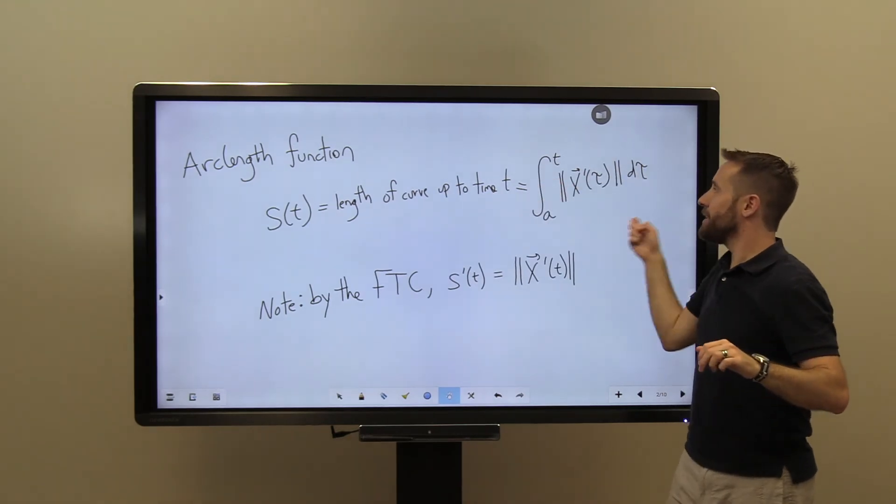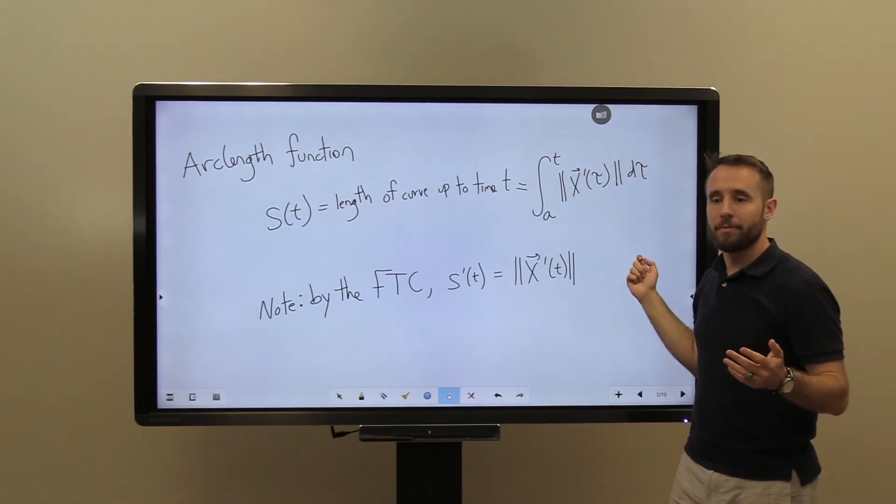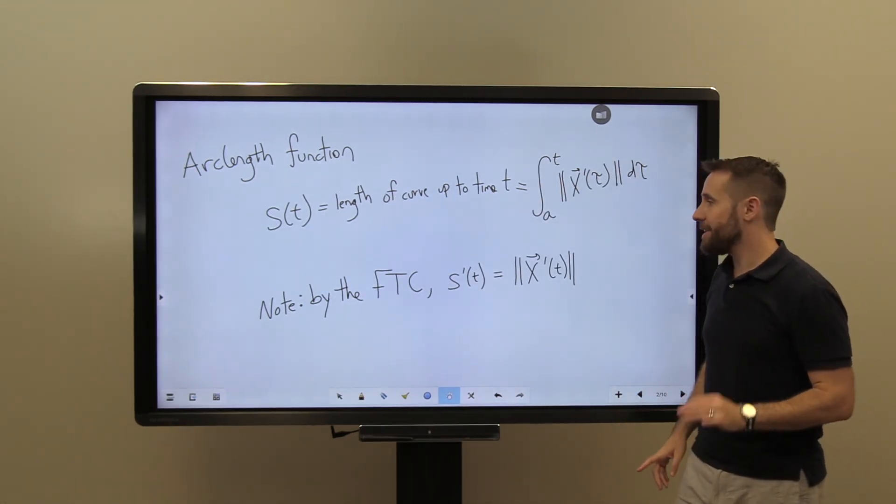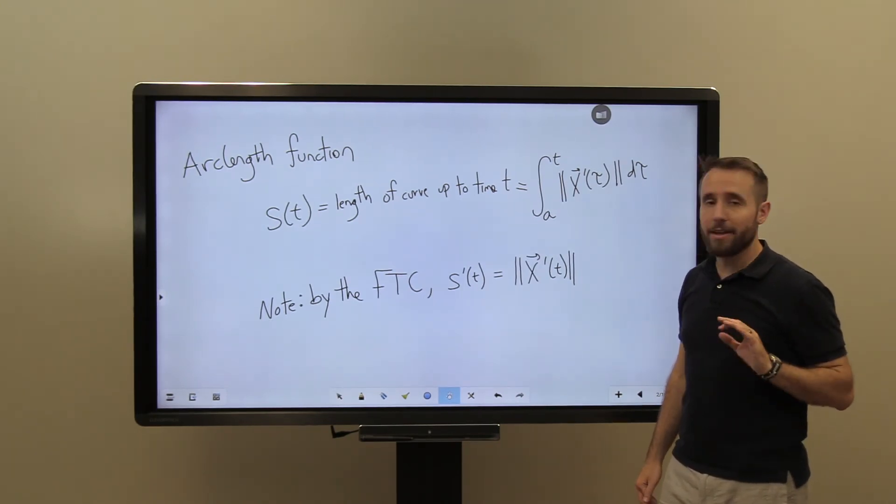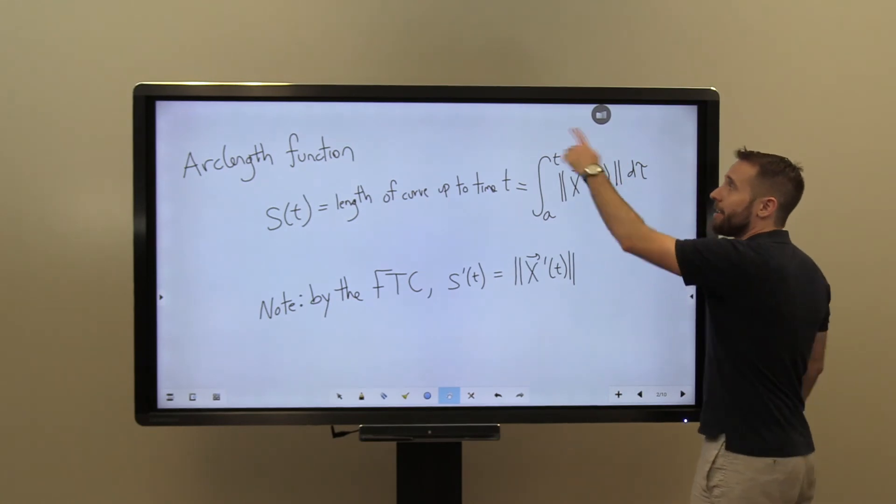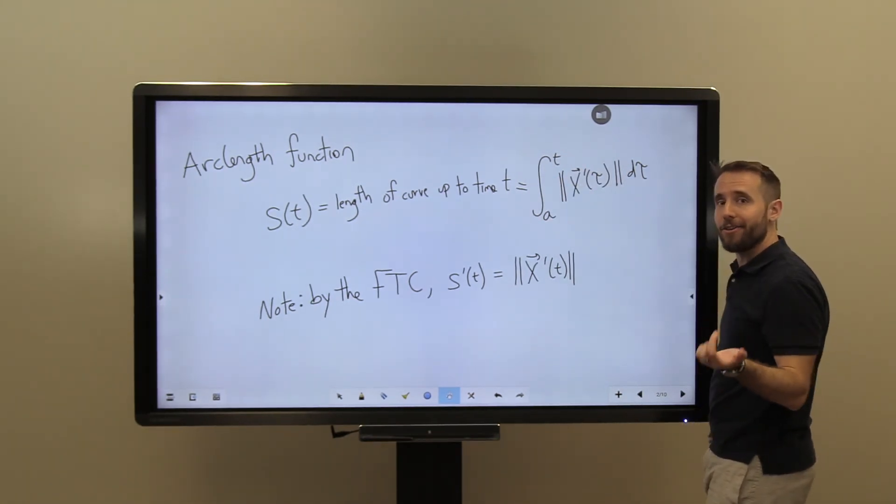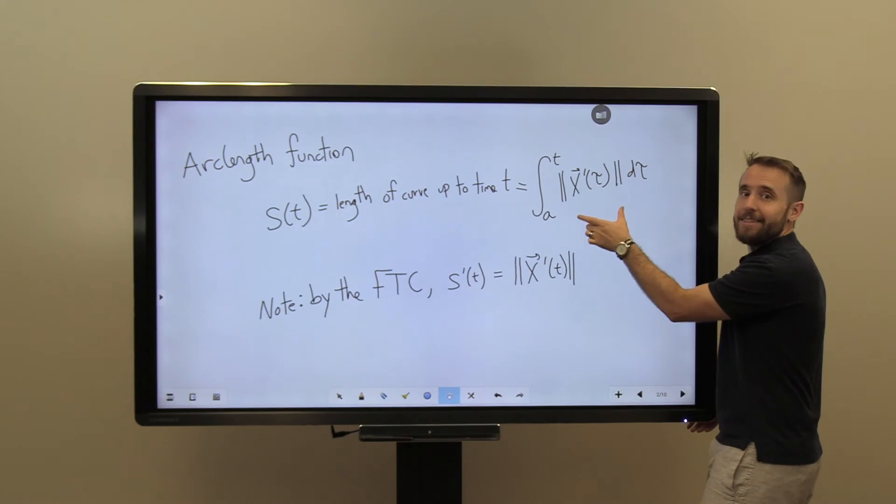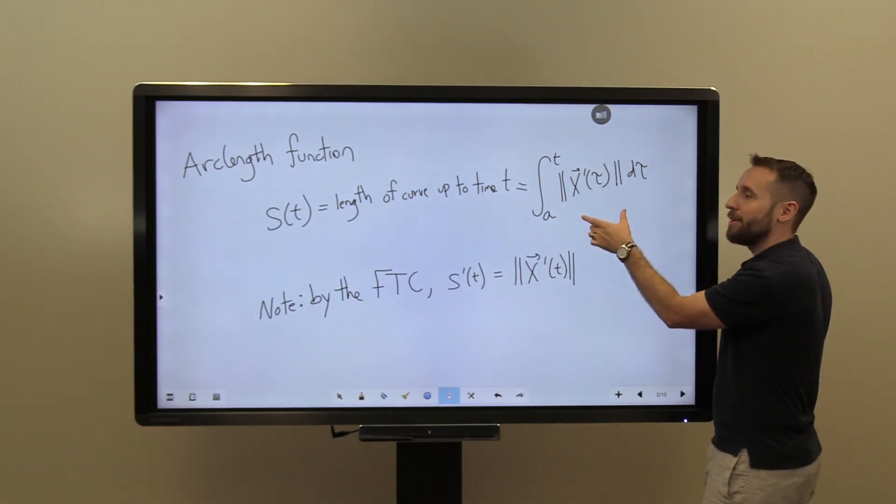And that is simply this integral right here. And so the final thing I'll say is that, notice, by the Calc 1 FTC, this is an area accumulation function. And the derivative of an area accumulation function is just this integrand, with the appropriate variable.